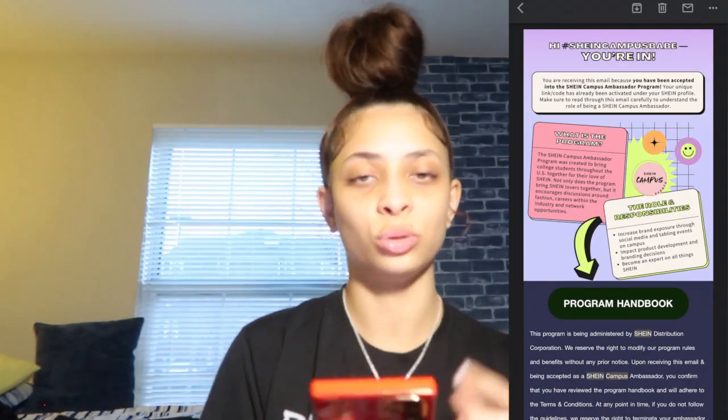The applications to become a SHEIN campus ambassador open on the 20th of each month. You can type in 'SHEIN campus ambassador program' and it'll show you where to go. When you open up the page, there's a link that says 'Apply Now.' You put your information in, your social media links, and all that. Whatever representative they have will look over your information and your social media account. If you are eligible, you will get an email within a week or two saying that you're accepted.